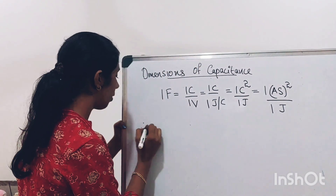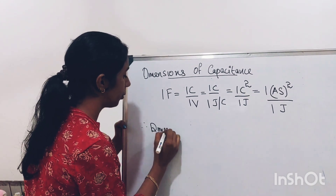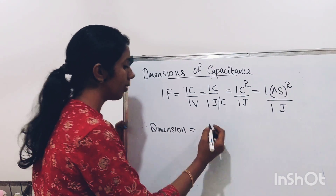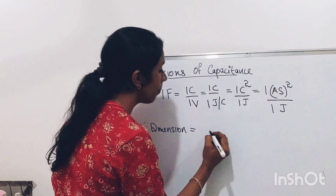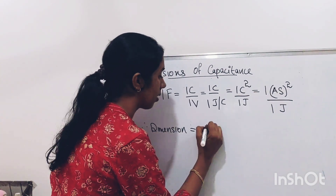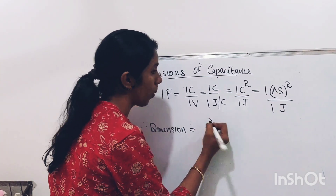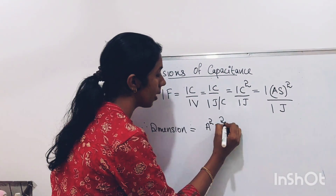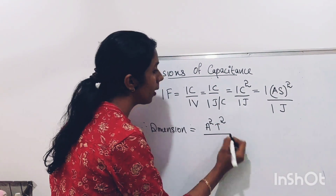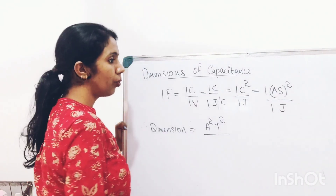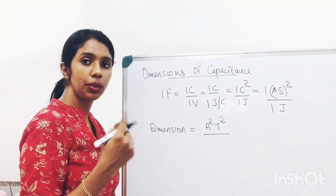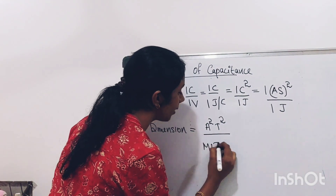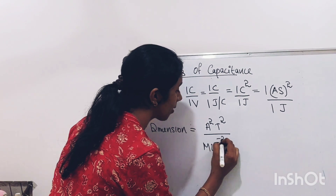Now we will find the dimension. The dimension of capacitance is: the dimension of Ampere is A, so A². The dimension of second is T, so T². This is divided by the dimension of Joule. Joule is Newton × meter, so its dimension is MLT⁻².